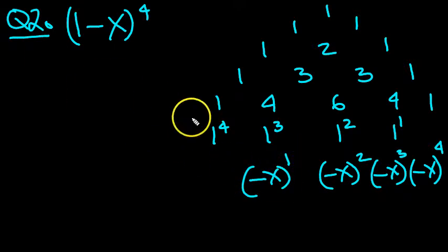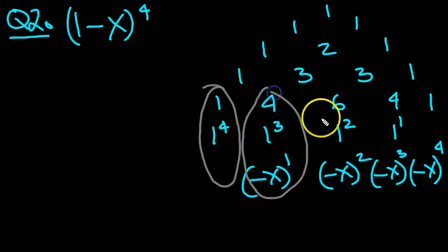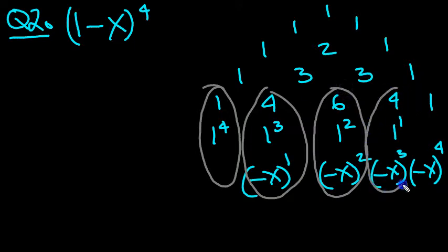Then we've got to combine the coefficients, so there's our first value, there's our second, there's our third value in the expansion, there's our fourth, and there's the fifth and last constituent of the expansion.